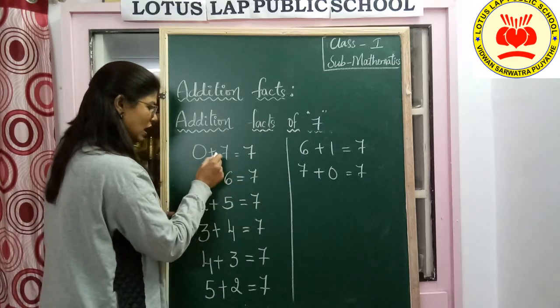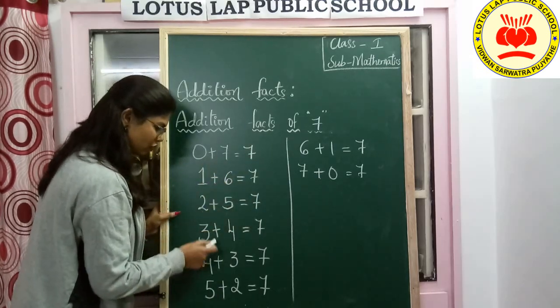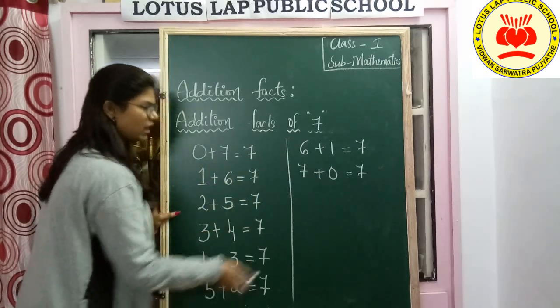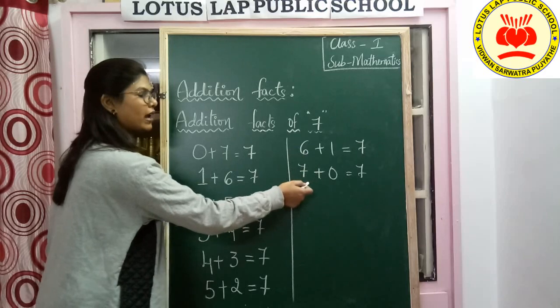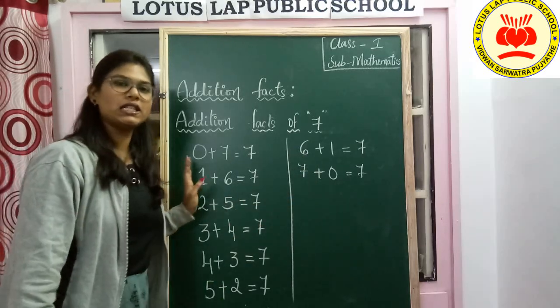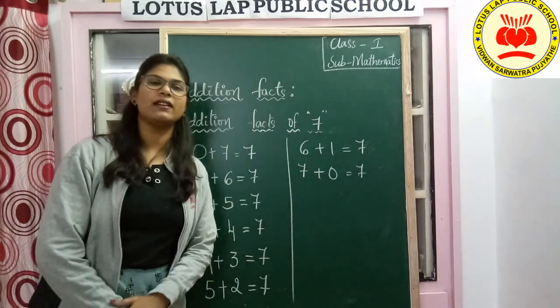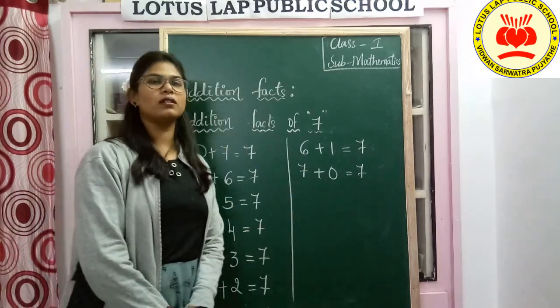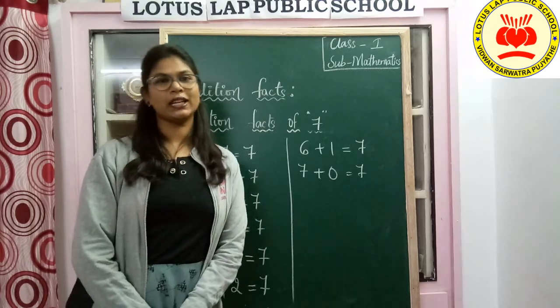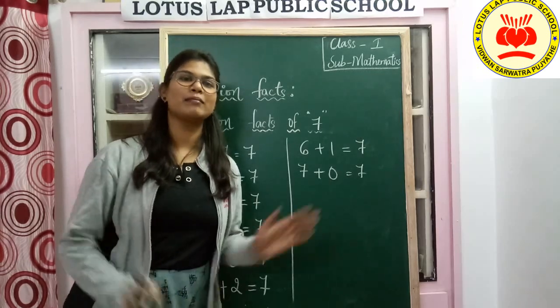How many did we get? 1, 2, 3, 4, 5, 6, 7 and 8 — 8 addition facts for 7. We will be continuing in the next session, children. Till then, bye-bye!